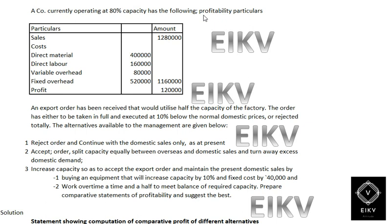This illustration is regarding the evaluation of an order. The information given in the table: sales will be $12,80,000; material cost is $4,00,000; direct labor is $1,60,000; variable overhead is $80,000; fixed overhead is $5,20,000; total cost $11,60,000 and when we deduct total cost from sales we will get a profit of $1,20,000.